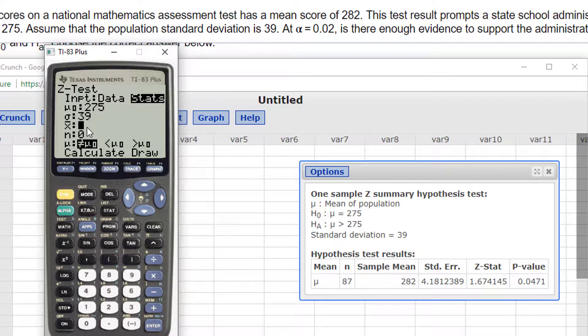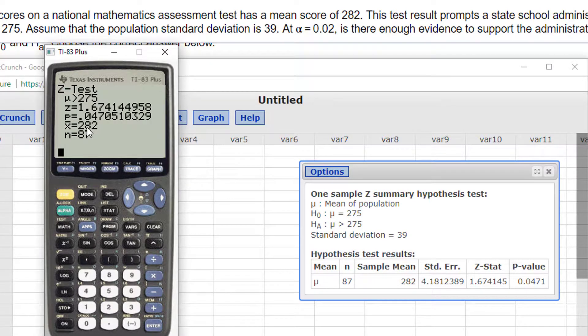The sample mean was, what, 282. My sample size. And I'm doing a right-tailed test, greater than. I hit Calculate. And I get all the same answers.